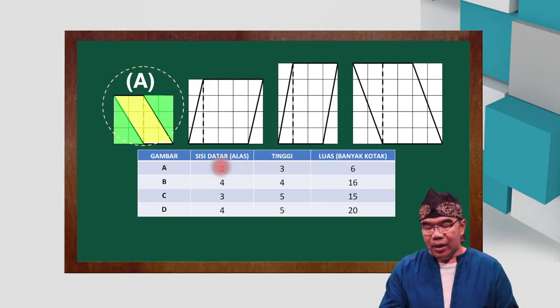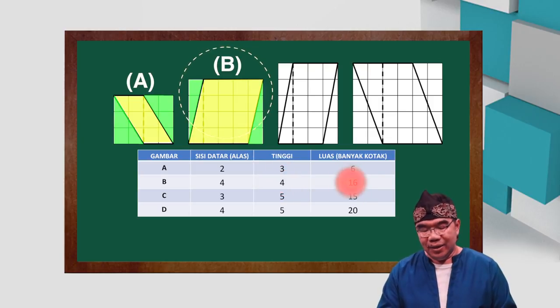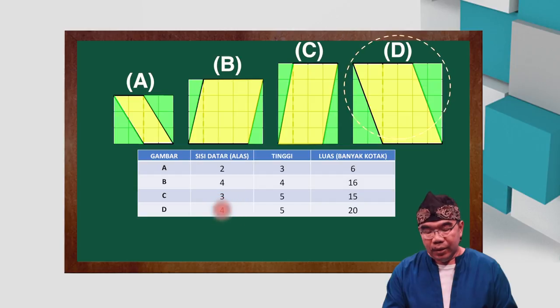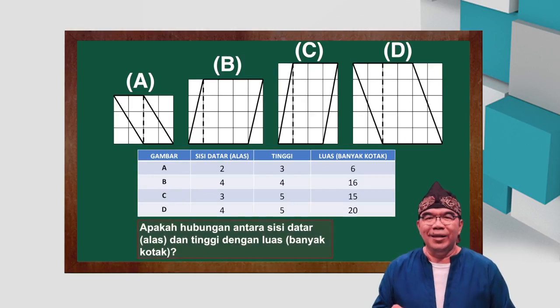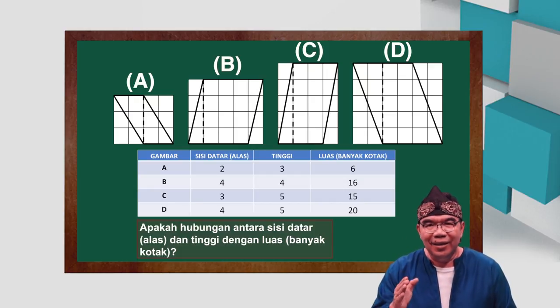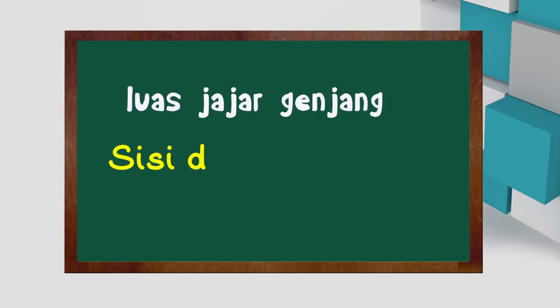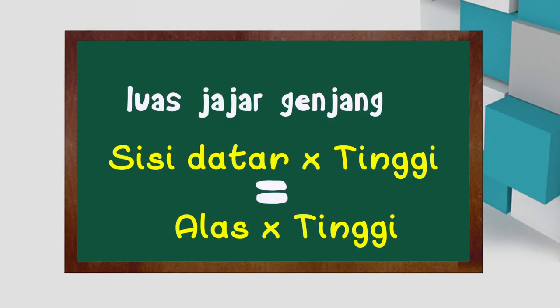Mari anak-anak, kita lihat hubungan yang terjadi. Yang A: sisi datarnya 2, tingginya 3, banyaknya kotak 6. Yang B: sisi datar 4, tinggi 4, banyak kotak 16. Yang C: sisi datar 3, tinggi 5, banyak kotak 15. Yang D: sisi datarnya 4, tingginya 5, banyaknya kotak 20. Apa hubungan yang terjadi antara banyaknya kotak, sisi datar dengan tinggi? Betul! Banyaknya kotak atau luas jajar genjang sama dengan sisi datar dikali tinggi. Kesimpulannya, luas jajar genjang adalah alas dikali tinggi, karena sisi datar kita anggap sebagai alas.